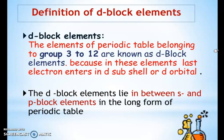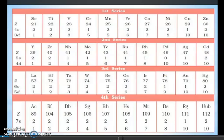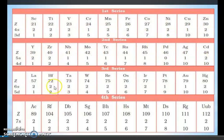The left side of the periodic table is S block elements and the right side is P block elements. Now we are going to read the first series. We will read three things: Z (atomic number), 4S electrons, and 3D electrons. This is how we are going to read the first, second, third, and fourth series.